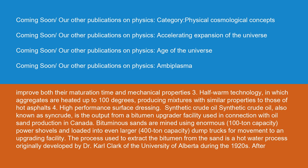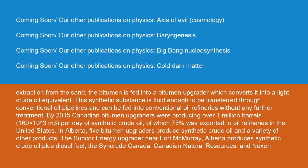Synthetic crude oil, also known as syncrude, is the output from a bitumen upgrader facility used in connection with oil sand production in Canada. Bituminous sands are mined using enormous 100-ton capacity power shovels and loaded into even larger 400-ton capacity dump trucks for movement to an upgrading facility. The process used to extract the bitumen from the sand is a hot water process originally developed by Dr. Karl Clark of the University of Alberta during the 1920s. After extraction, the bitumen is fed into a bitumen upgrader, which converts it into a light crude oil equivalent. This synthetic substance is fluid enough to be transferred through conventional oil pipelines and can be fed into conventional oil refineries without any further treatment. By 2015, Canadian bitumen upgraders were producing over 1 million barrels (160,000 m³) per day of synthetic crude oil, of which 75% was exported to oil refineries in the United States.